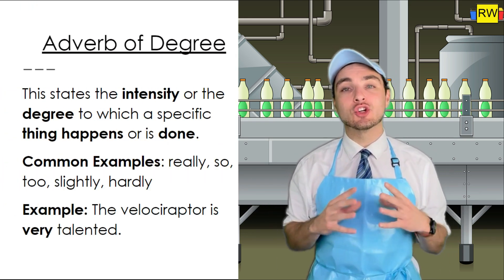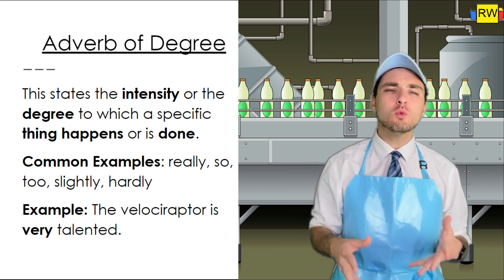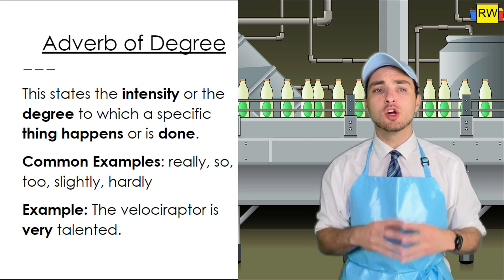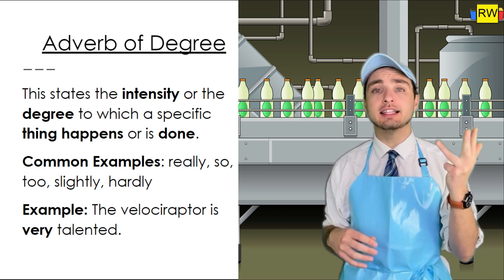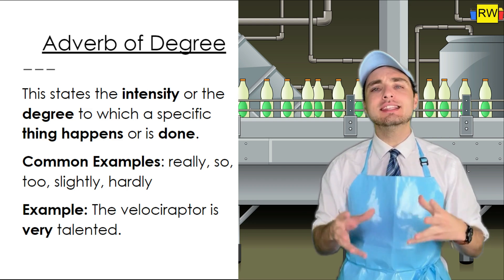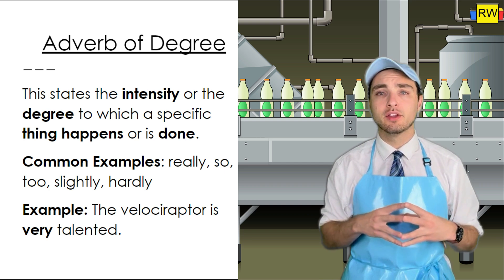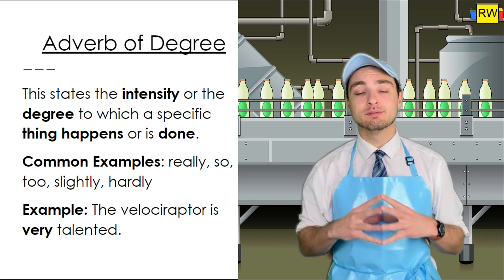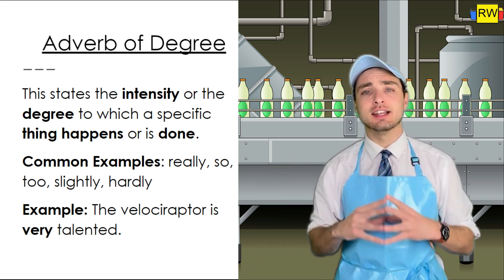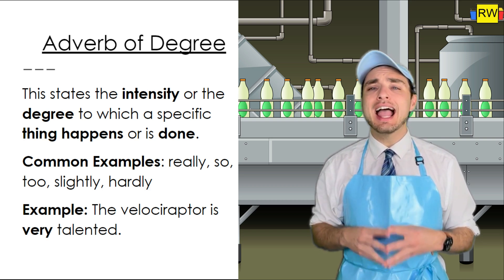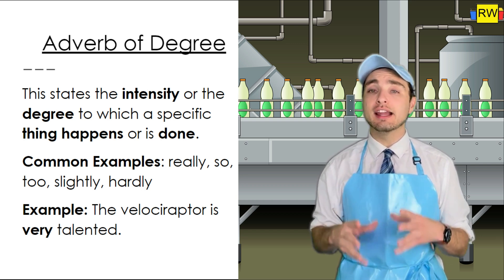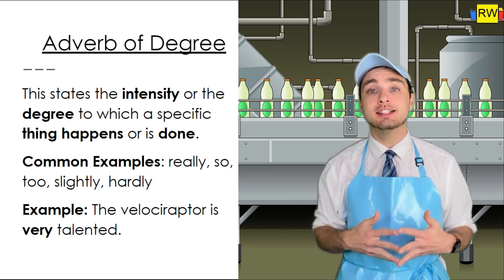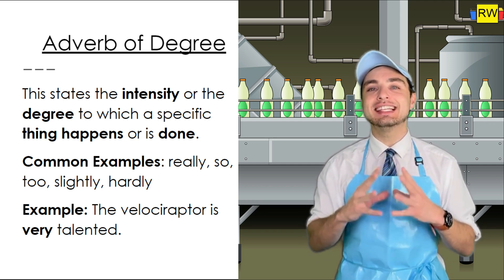Next is adverb of degree. This states the intensity or the degree to which a specific thing happens or is done. Some examples of adverbs of degree are really, so, to, slightly, and hardly. All of these help indicate some kind of degree or intensity to which something is done. For example, we have this sentence: The velociraptor is very talented. We could have easily had the sentence, the velociraptor is talented. However, we want to go ahead and add extra description to the adjective talented. Therefore, we can add the adverb of degree, very, in front of it to specify the degree to which the velociraptor is talented. Therefore, very is the adverb of degree in this sentence.